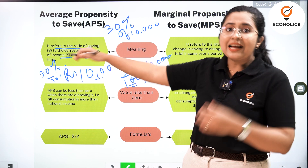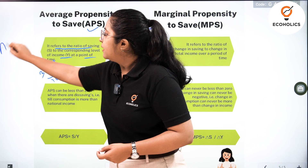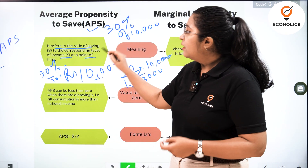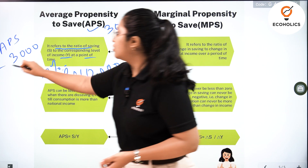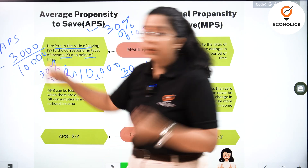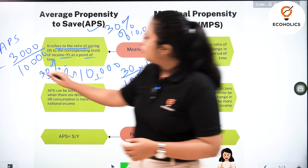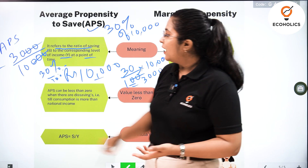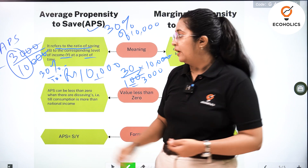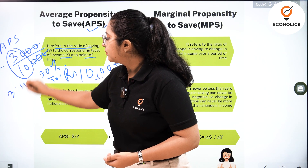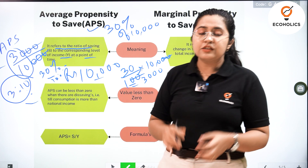If we want to write it as a ratio, or write it as APS, it is the ratio of savings to the corresponding level of income. Savings are 3,000 and the corresponding level of income is 10,000. You minimize the fraction by cancelling out the additional zeros, giving you 3 upon 10 or 3 is to 10 as your average propensity to save — that is your APS.